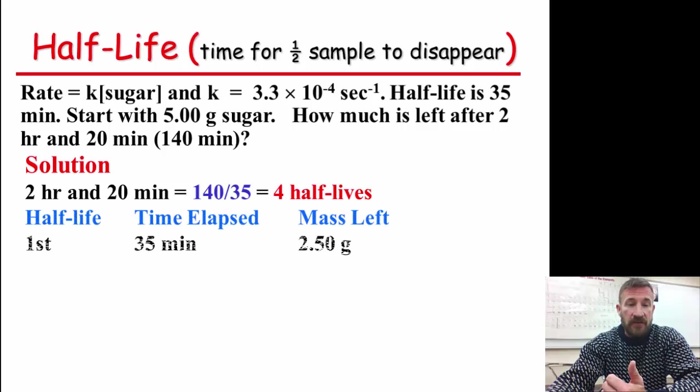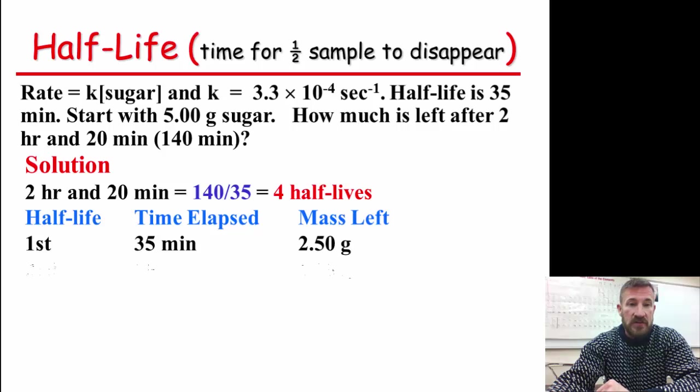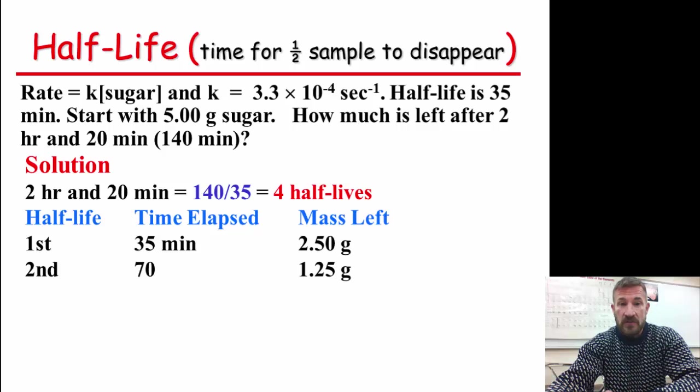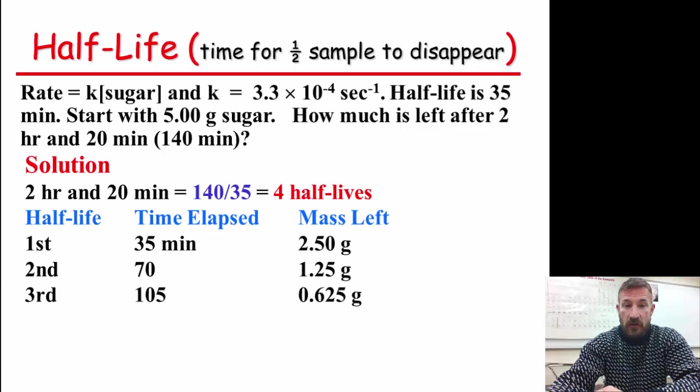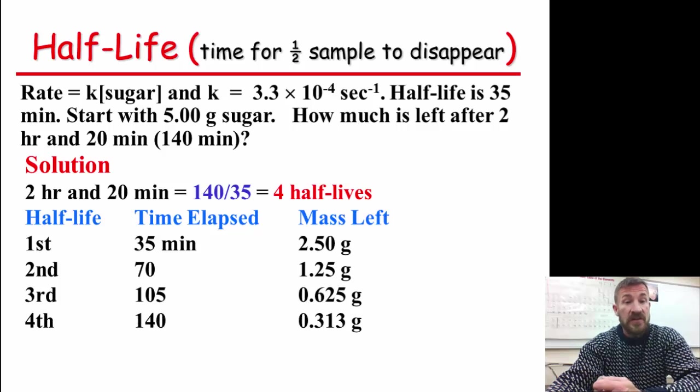And the half-life, we know this is first order, and the time elapsed is 35 minutes. The mass left is 2.5 grams. And then after the second half-life, time elapsed is 70 minutes. Mass left is 1.25 grams. And we got the third half-life, and the time elapsed, and the mass left. And finally, the fourth half-life, with the time elapsed, and the mass left.